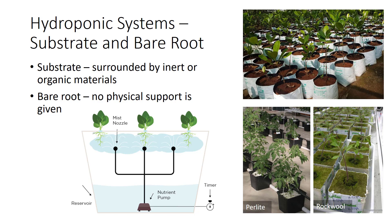Hydroponic systems are classified in two ways: substrate system and bare root system. In a substrate system, plant roots are surrounded by either inert or organic materials that provide support for the plant. Materials commonly used for inert substrate systems include sand, gravel, vermiculite, perlite, and horticultural rock wool. Natural organic substrates are typically used in bag culture, where plants are grown in bags containing these materials and are watered using a drip irrigation system.